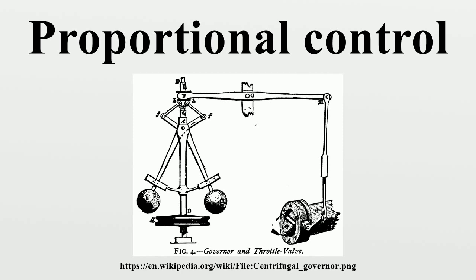Proportional control is how most drivers control the speed of a car. If the car is at target speed and the speed increases slightly, the power is reduced slightly, or in proportion to the error, so that the car reduces speed gradually and reaches the target point with very little, if any, overshoot. The result is much smoother control than on-off control.